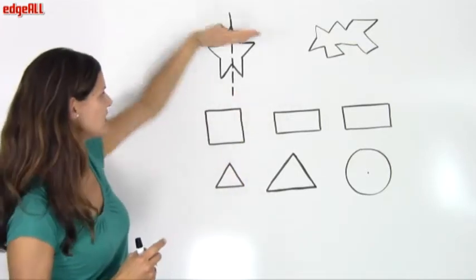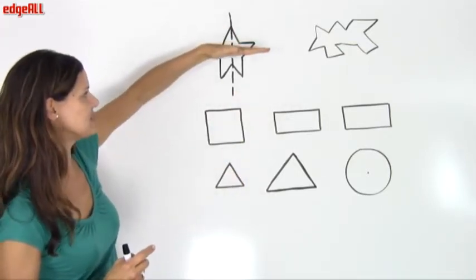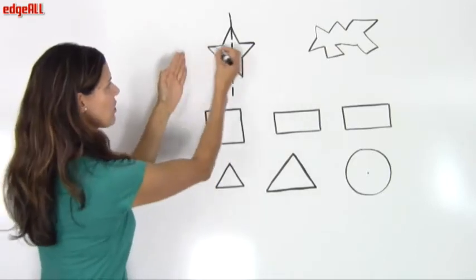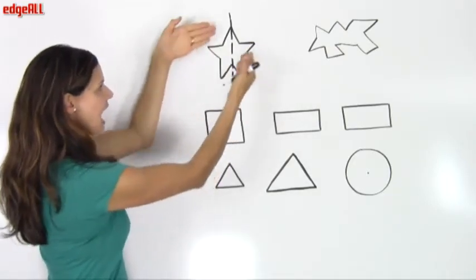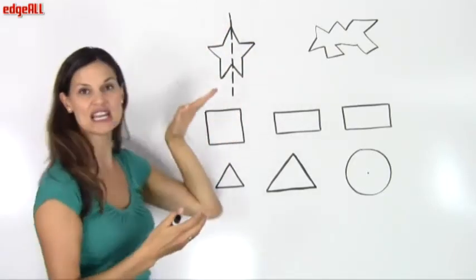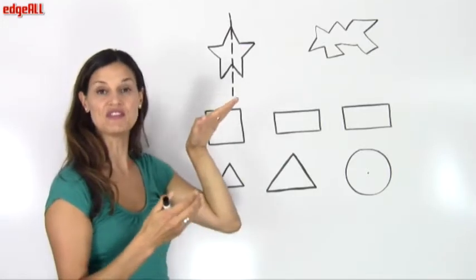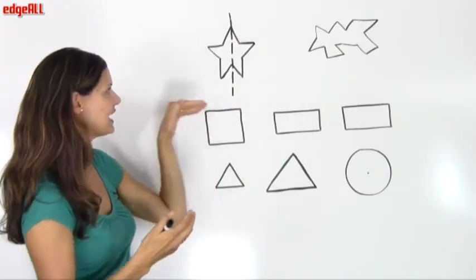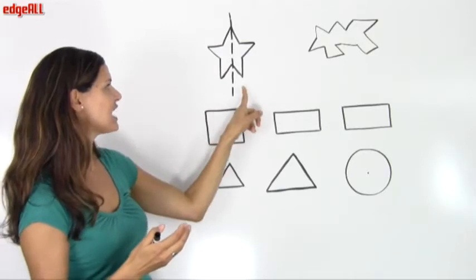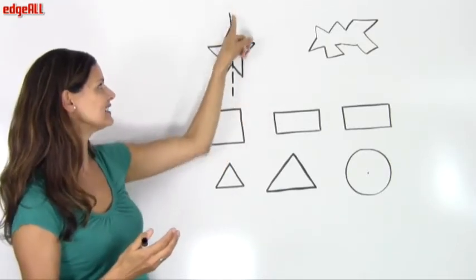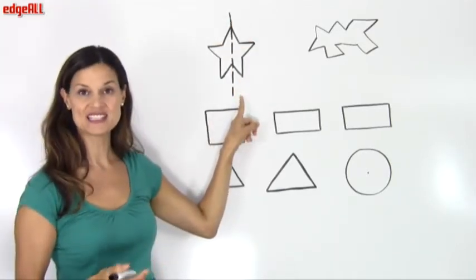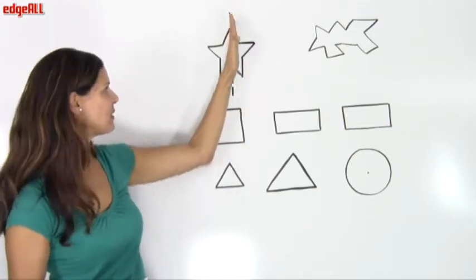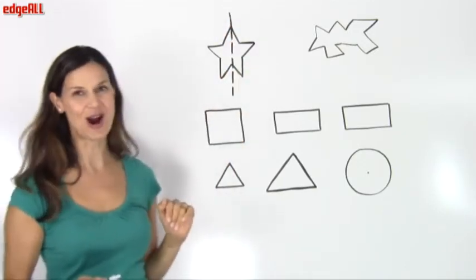Now this shape does not have a line of symmetry going this way, for example. Going horizontally, I don't have a mirror image or a reflection going across a horizontal line. This shape only has one line of symmetry, which is the line that goes vertically down the middle of my star.